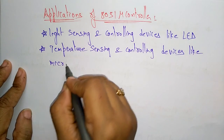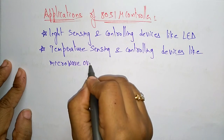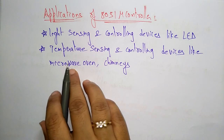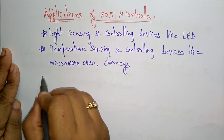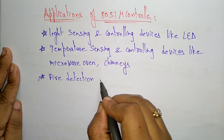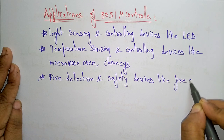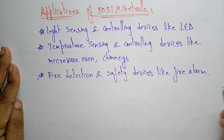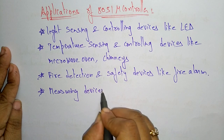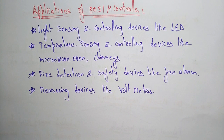Temperature sensing devices include the microwave oven, which uses a microcontroller chip. The 8051 is also used in fire detection and safety devices like fire alarms, as well as in measuring devices such as volt meters.